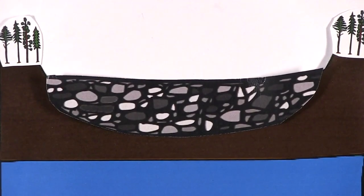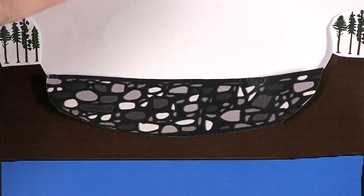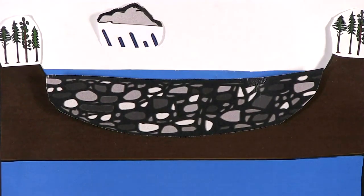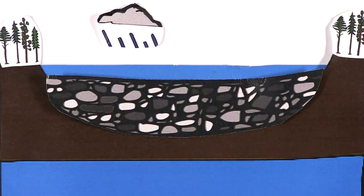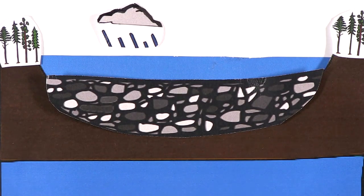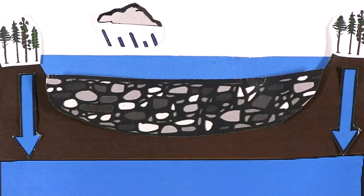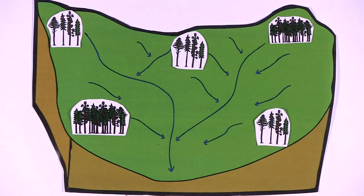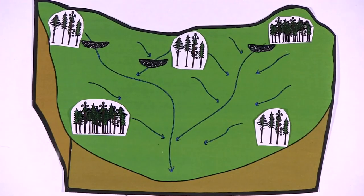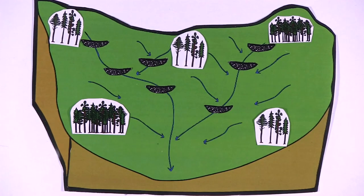Check dams need to be built in the right places, ideally where water can be directed to suitable areas for groundwater recharge. Locations where natural vegetated floodplains exist are particularly suitable. Check dam implementation needs to be started upstream of a catchment, in order to avoid the destruction of downstream structures.